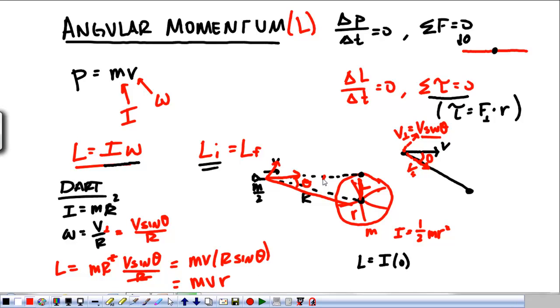So, the angular momentum for my dart is MV times little r. That straight line distance there. Well, guess what? As I move to this point, theta changes, big R changes. But the radius of that wheel remains the same. So, the dart is going to have constant angular momentum as we go into this. So, that's pretty cool.